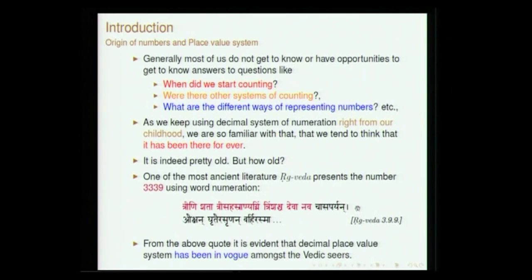Obviously, it is pretty old, but how old? As I was quoting, there is a verse from the Rig Veda where the number 3,339 has been represented in word numerals — for example, 'tri' is 3, 300, and so on.